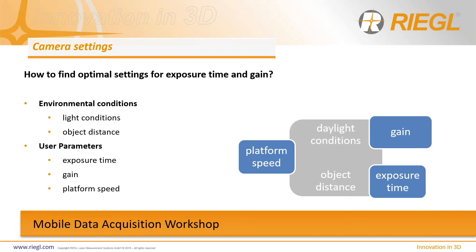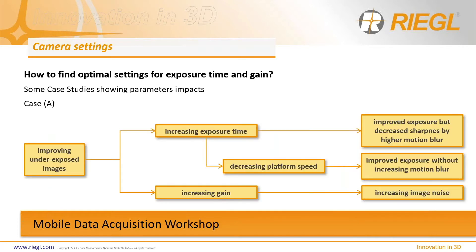Object distance is another factor. For airborne folks this is easy, as they're flying at a fixed altitude and variations are minor. For mobile scan systems, we're driving at highway speed and objects are coming and going near and far all at once. You have to pick a happy medium between where you would like to see things clearly and where you can see things clearly.